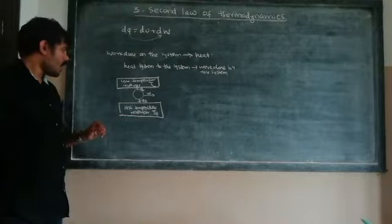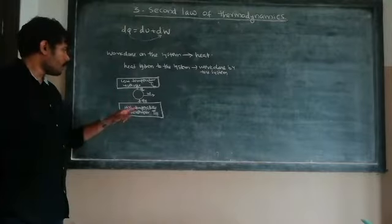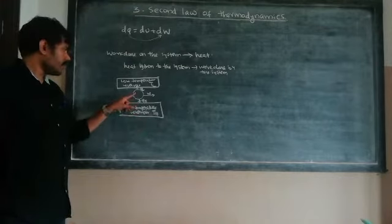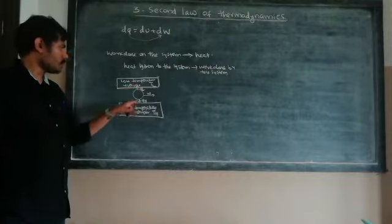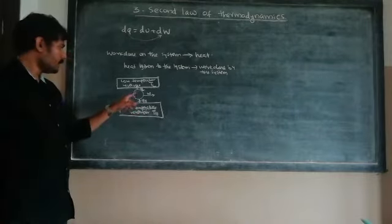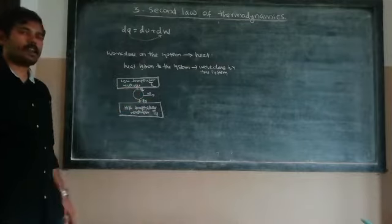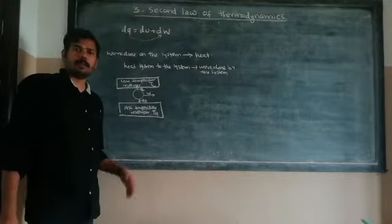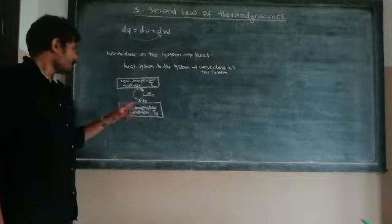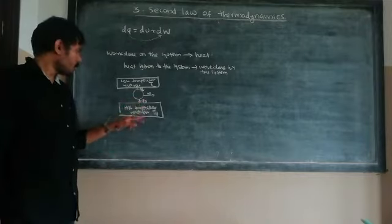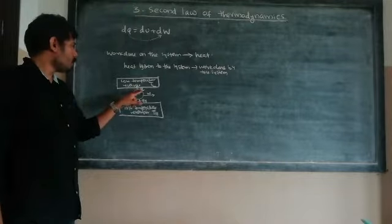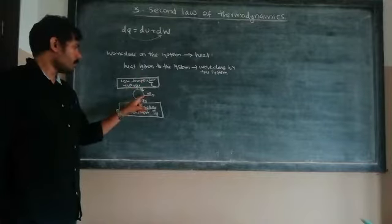We consider such a machine which has a working substance that can absorb an amount of heat QH from a high temperature reservoir at temperature Th, and it rejects an amount of heat QL to the low temperature reservoir after doing work. A heat engine is a machine in which a working substance absorbs an amount of heat QH from a high temperature reservoir at temperature Th and rejects an amount of heat QL to a low temperature reservoir at temperature Tl after doing work.